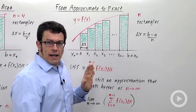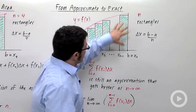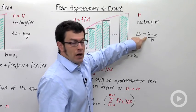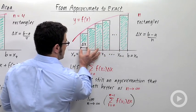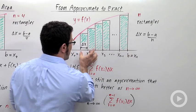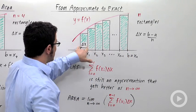Let's say that we have n rectangles, so I'm not going to specify the number, just n. Δx, the width of each rectangle, will be (b-a)/n. So each of these widths is (b-a)/n. b minus a is this entire width divided by n, the number of rectangles. It gives me the individual width here.